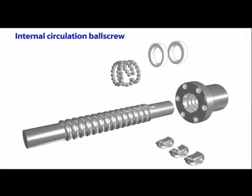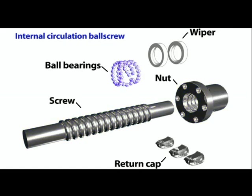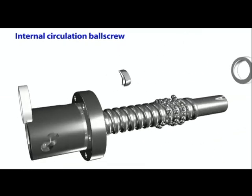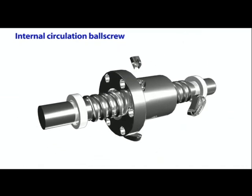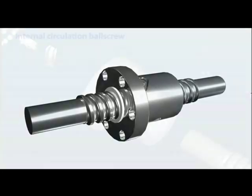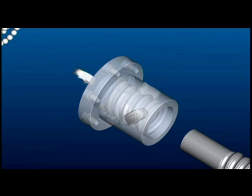Internal circulation ball screws are composed of a screw, nuts, ball bearings, return caps, and wipers. The bearings circulate in single circles. The return cap spans two adjacent bearing races, forming a single closed circuit. Because the return cap is installed within the nut, this type of ball screw is known as an internal circulation ball screw.